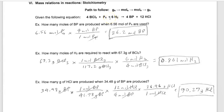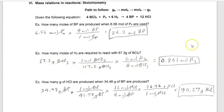Put moles of BCl3 on the bottom to cancel, and I'm left with moles of H2. Now we do the math: 67.3 times 6, divided by 117.2, divided again by 4. Three significant figures here, four here — the rest are exact. That's my answer.